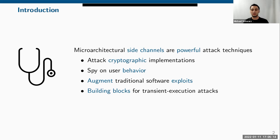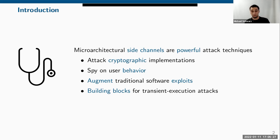For example, if you mount an attack on the kernel, you first need to find the kernel's location because of kernel address space layout randomization (KASLR), and side channels can be very effective in finding it. These side channels are also an important building block for transient execution attacks like Zombie Load, Spectre, and Meltdown — which are microarchitectural attacks that rely on side channels.